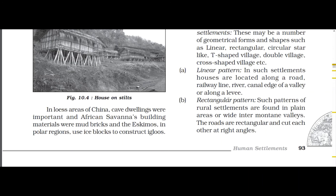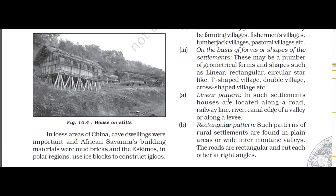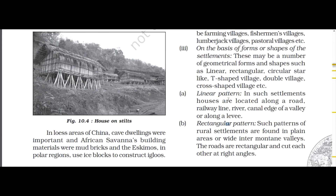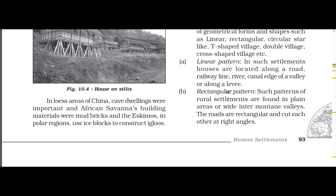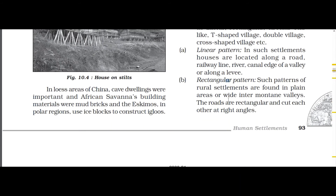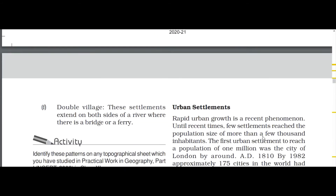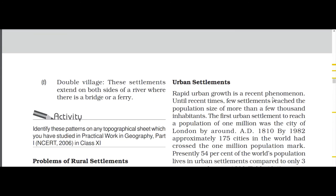Based on forms and shapes, settlements are categorized as linear, rectangular, double village, and other types. These are all types of settlements classified on the basis of their shape.